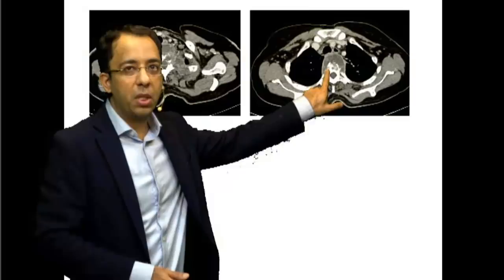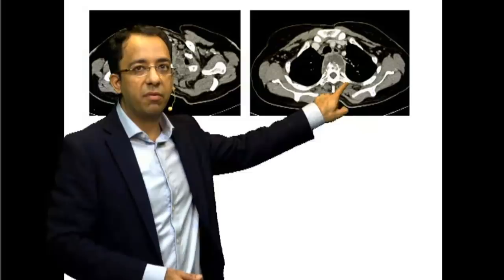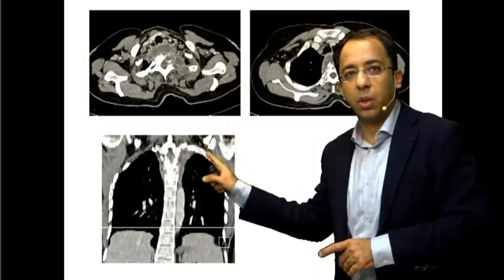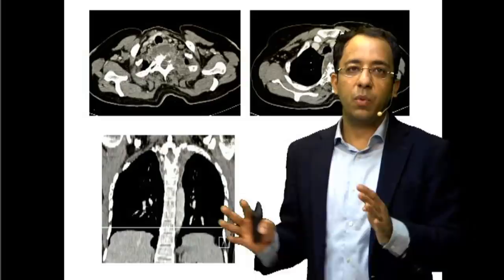Another CT section clearly shows destruction with some fragments remaining, along with the paravertebral abscess — the same rim enhancement around the lesion, with central hypodensity, typical of an abscess. A coronal reconstruction was done, which shows the abscess and explains why the chest X-ray had those paravertebral shadows converging onto the spine, allowing us to correlate the X-ray and CT findings.